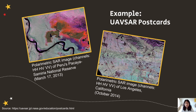And now, here are some examples to spark your creativity. These are postcards downloaded from NASA's Airborne Radar UAV SAR, using UAVSAR imagery to highlight different radar polarizations, or channels. This allows you to highlight different features on the ground, such as open water, roads, and vegetation.